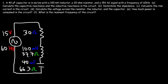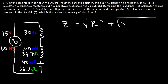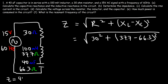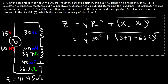Now that we have the capacitive reactance and the inductive reactance, let's calculate the impedance in the circuit, represented by the letter Z. The formula is the square root of R squared plus (XL minus XC) squared. The resistance is 30 ohms, the inductive reactance is 37.7 ohms, and the capacitive reactance is 66.3 ohms. The impedance in the circuit is 41.45 ohms.